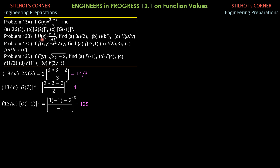Problem 13b: if h(x) is (x minus 1) over (x plus 1), find: 3 times h(2) for letter a, h(b²) for letter b, and h(u/v) for letter c.